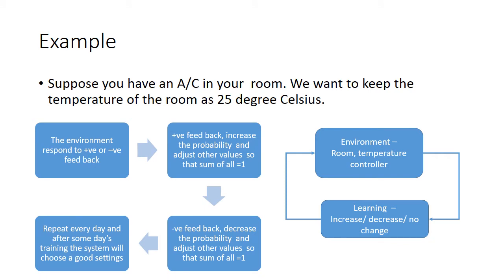Without any prior knowledge of your temperature preference, the automaton randomly selects the first setting using the probability vector corresponding to the temperature settings. Since the probability values are uniformly distributed, any one of the settings will be selected with equal likelihood. After the selected temperature is stabilized, the environment may respond with a simple good-bad feedback response.